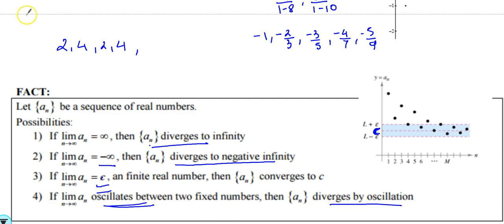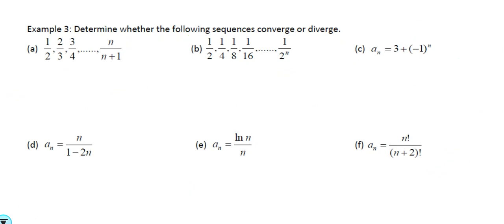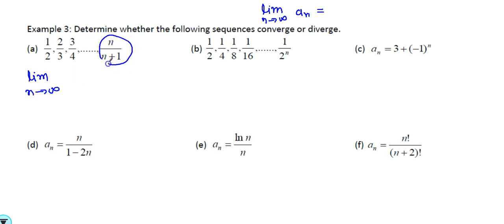On page six we have several sequences and we have to identify if they diverge or converge. You must show the limit statement: lim as n→∞ of a_n. For the first one, lim as n→∞ of n/(n+1) — the degree of numerator and denominator is the same, so this answer is 1. We can say this sequence converges to 1.